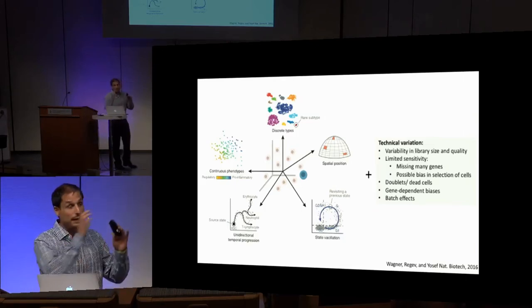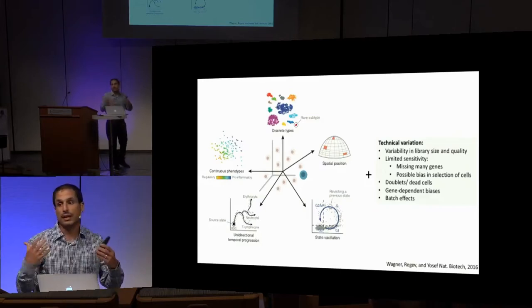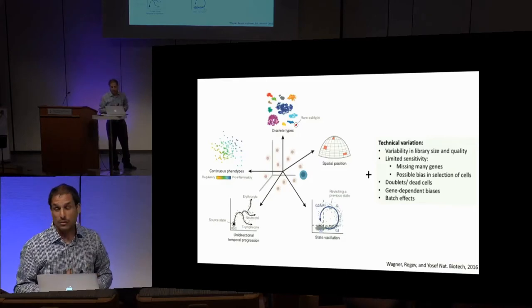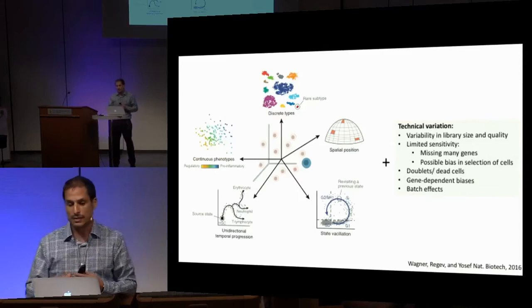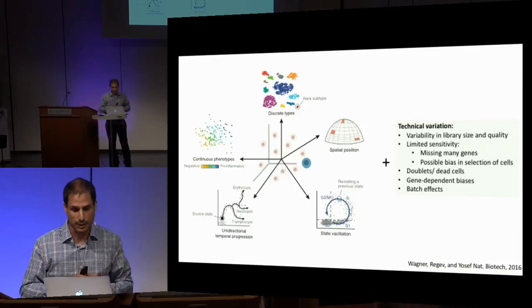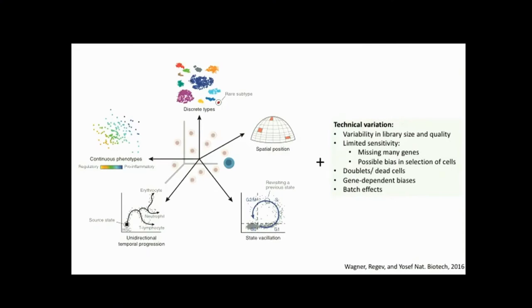When we talk about technical variation, I've laid out a list of factors that constitute what we call technical variation. The first thing is that we have many, many RNA-seq libraries, each of which can have a different quality and depth. Another strong component that confounds single-cell data quite a lot is limited sensitivity, meaning we can miss a lot of genes and also a lot of interesting cells. Some more idiosyncrasies include the presence of doublets and dead cells in our wells, gene-dependent biases, and of course the everlasting batch effect.